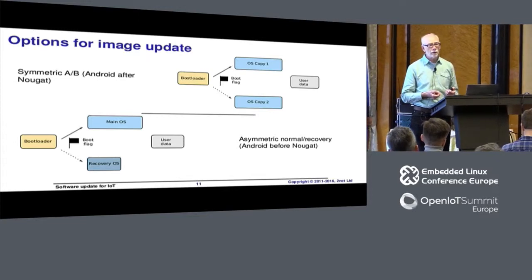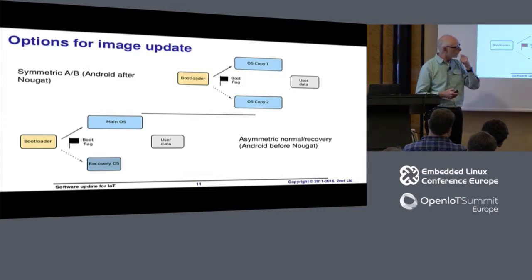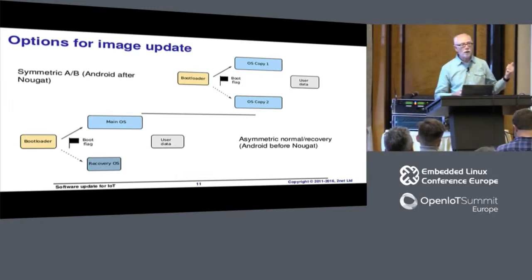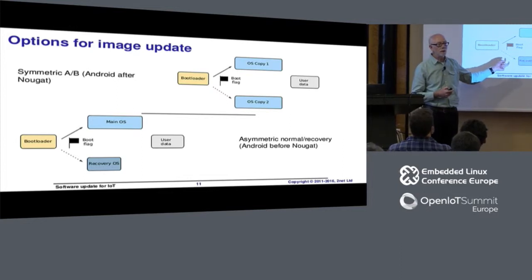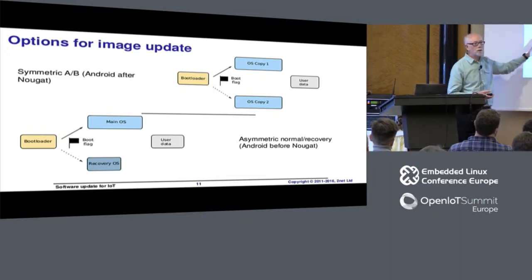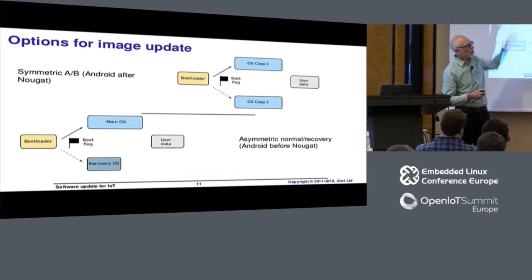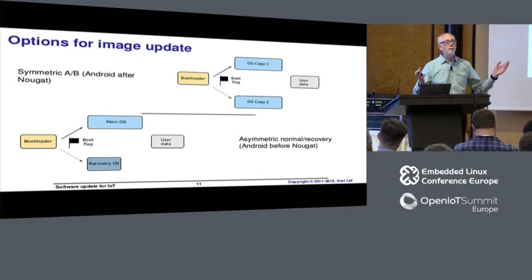With the falling prices of flash storage and the move to things like eMMC, that's less of an issue. One mitigation is the asymmetric case: you have just one copy of the main OS, but a much smaller recovery OS. When you want to do an update, you boot into the recovery OS and use that to update the main system partition. This is the way Android used to work, and in the recent Nougat release, they've switched to symmetric update as an option — hailing it as a big new feature, except we've been doing it for decades.